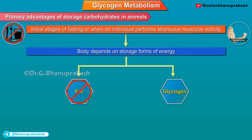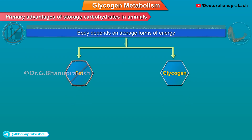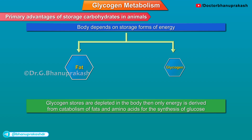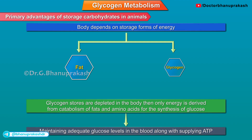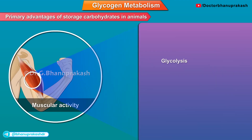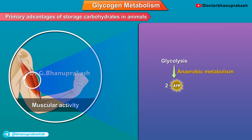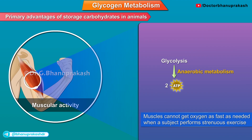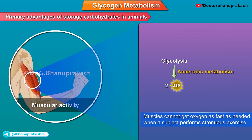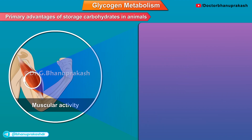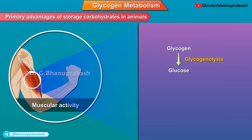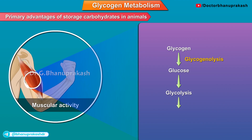The other major energy storage form in animals is glycogen. Once glycogen stores are depleted in the body, energy is derived from catabolism of fats and amino acids for the synthesis of glucose, thereby maintaining adequate glucose levels in the blood along with supplying ATP to the body's needs. Glycolysis provides a mechanism of anaerobic metabolism, especially in muscle cells that cannot get oxygen as fast as needed when a subject performs strenuous exercise. In such an instance, glycogen in the muscle provides immediate energy by glycogenolysis to produce glucose, which immediately undergoes glycolysis to provide instant energy to the exercising muscles.